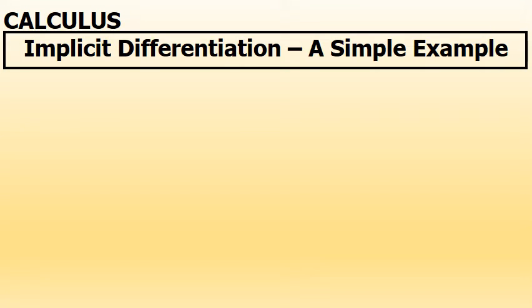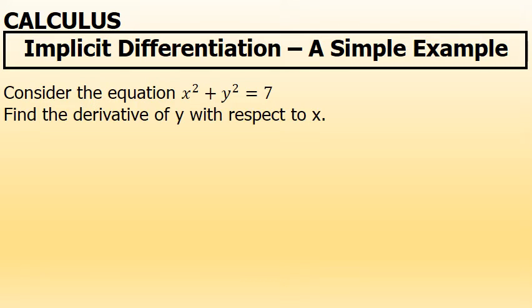A very basic example of implicit differentiation would be when you are given the equation x squared plus y squared equals 7 and asked to find the derivative of y with respect to x.